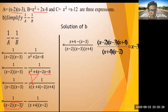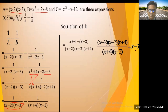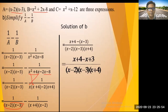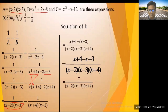So: [(x + 4) - (x - 3)] / [(x - 2)(x - 3)(x + 4)]. Expand the numerator: x + 4 - x + 3 = 7. So the result is 7 / [(x - 2)(x - 3)(x + 4)]. This is the simplification of part (b).